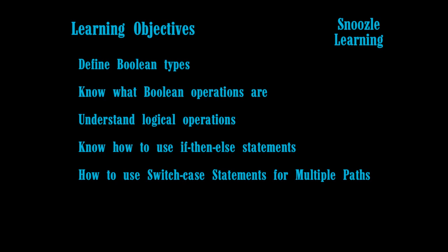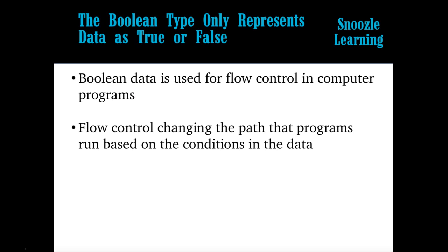Boolean operators are things like: if these two things are equal, or this and that — if one is true, one is false, or false, this is true, stuff like that. We'll understand logical operators, know how to use if-then statements, which are the basis of flow control, and also use switch-case statements, which are similar to cascading if-then statements but a little bit different.